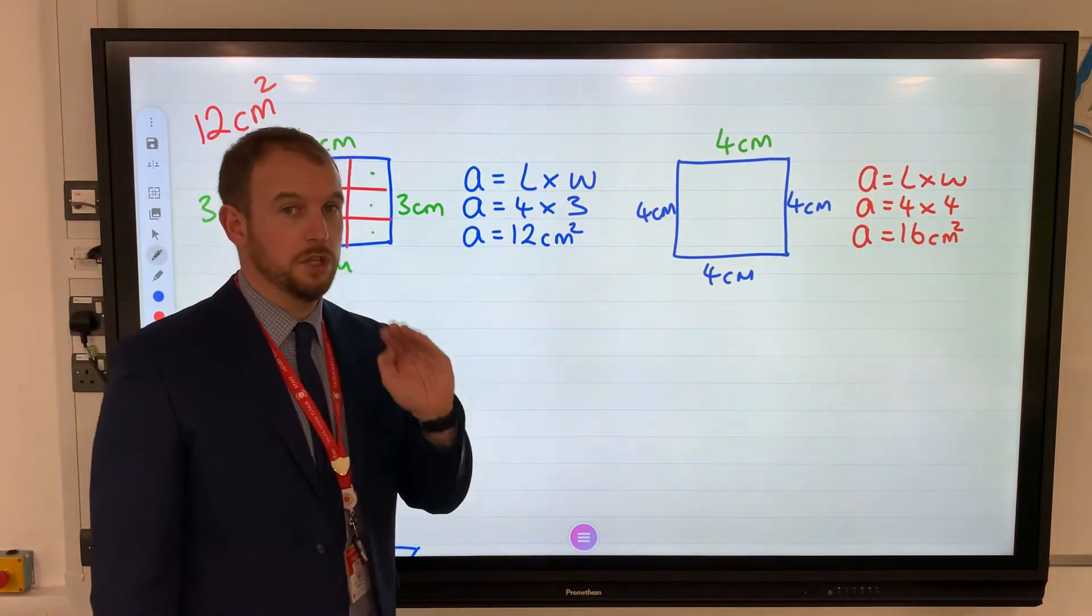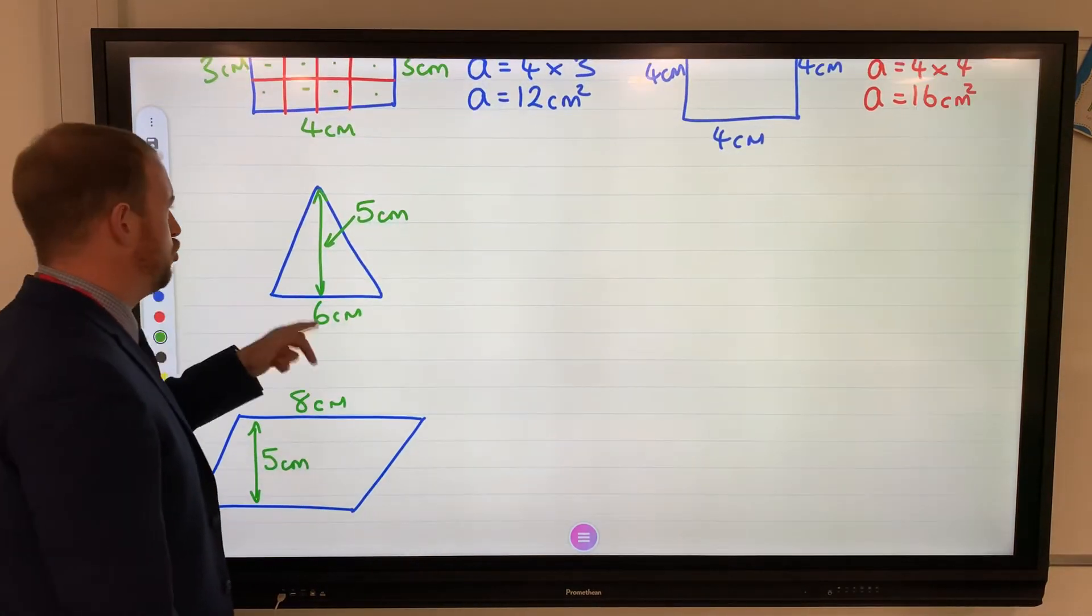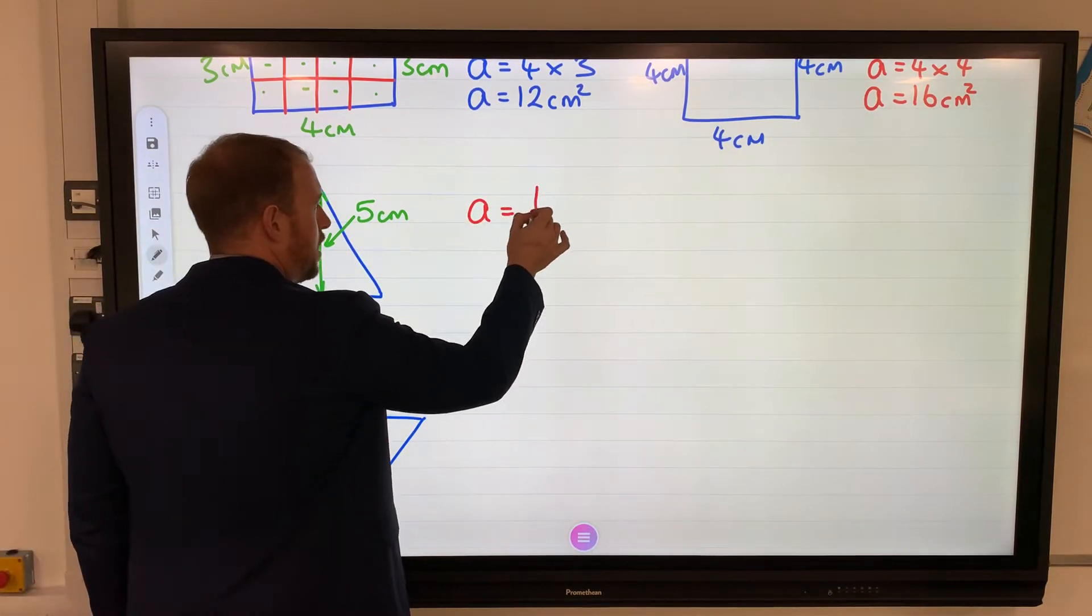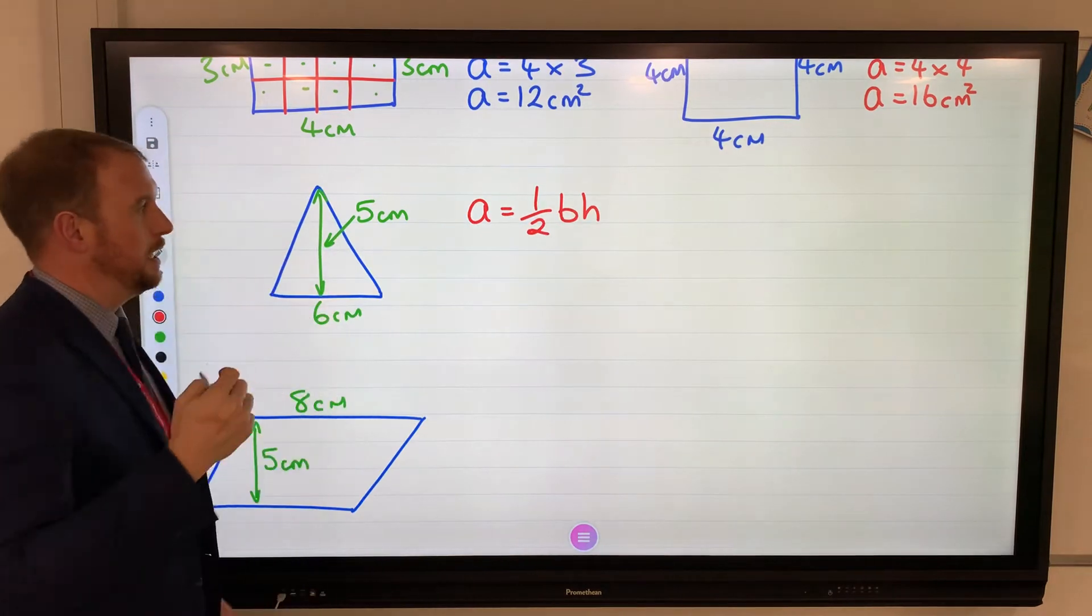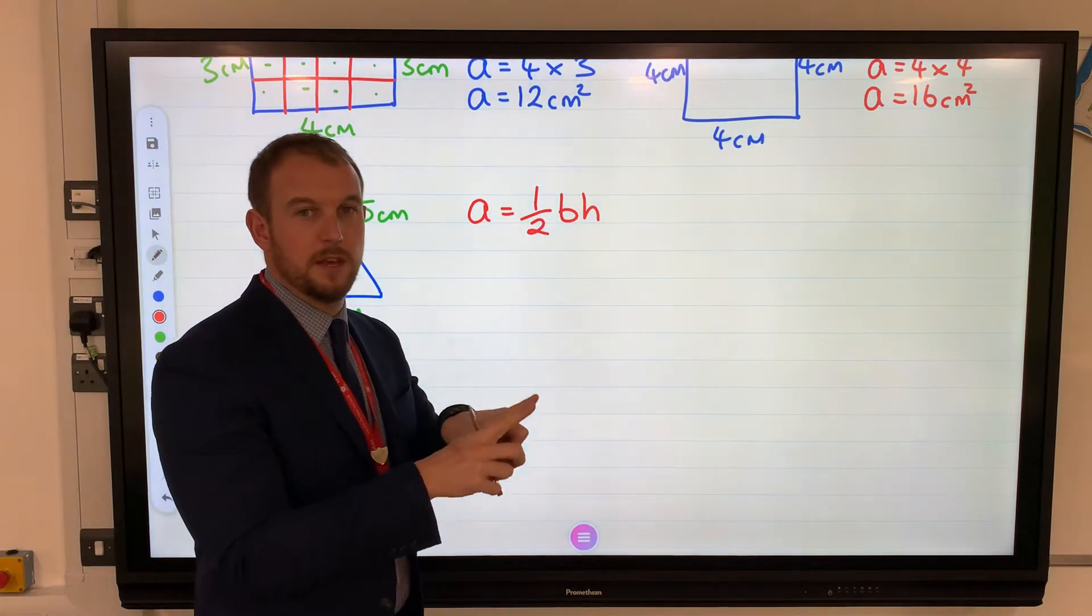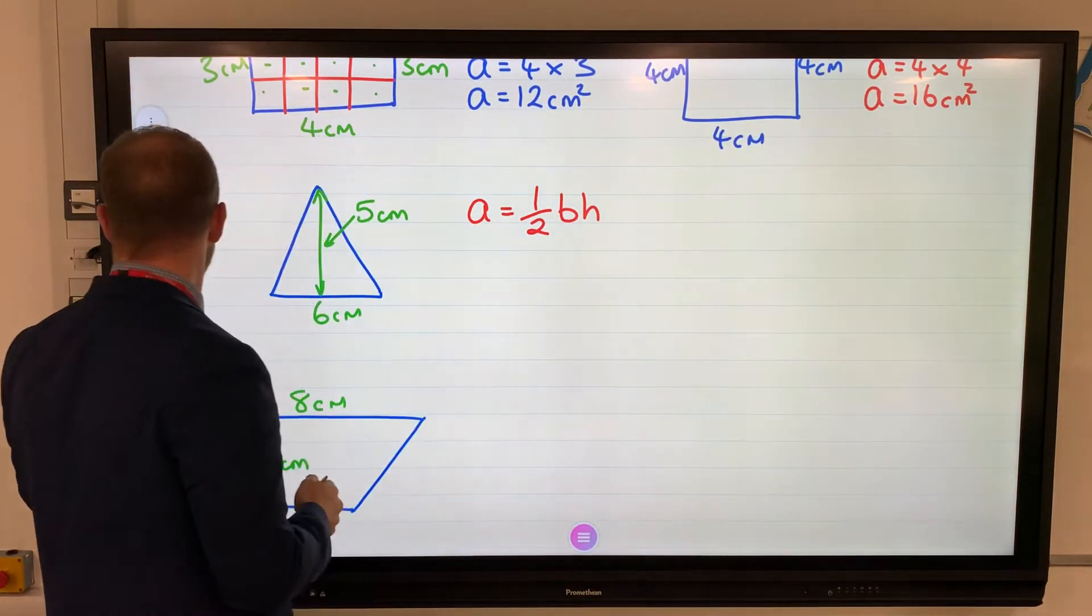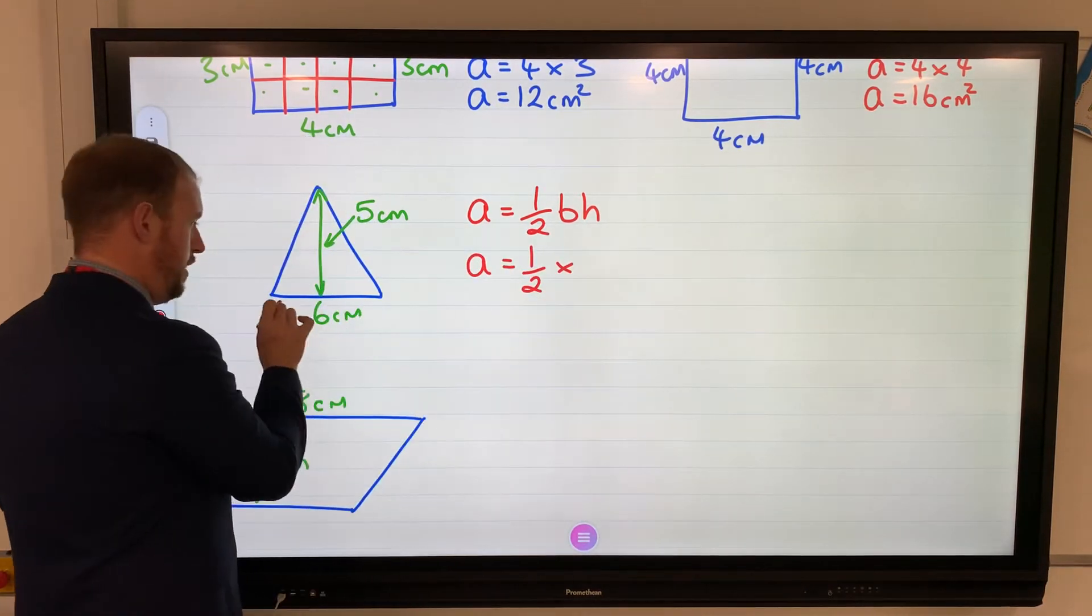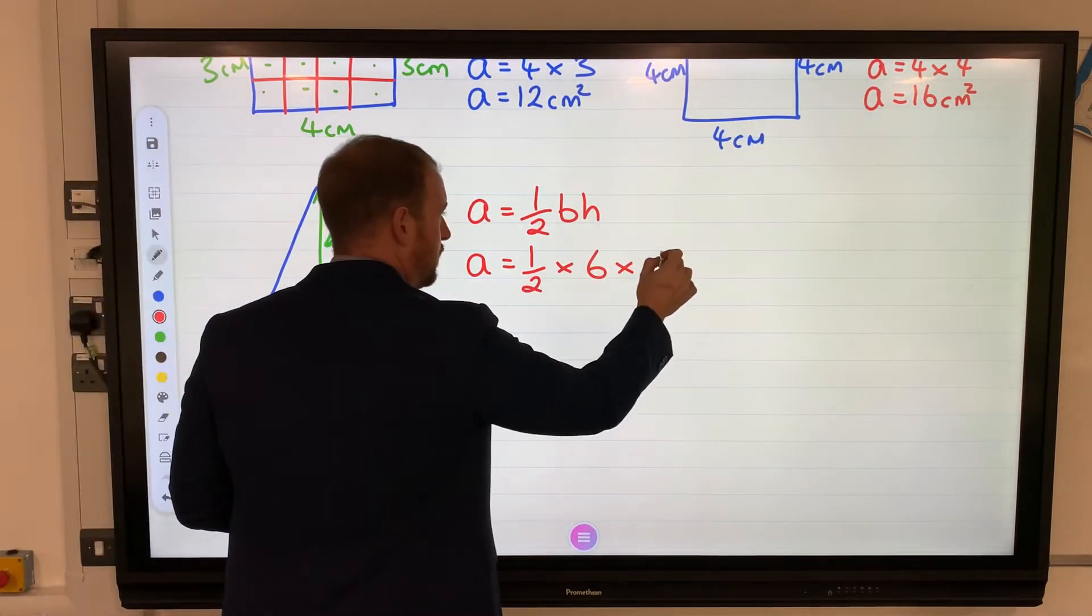A triangle - different formula this time. Area equals half of the base times the height. Now, as math teachers we're a little bit lazy - we don't put the times sign when we just stick them together, but we have to remember there's a times sign in between. So area equals half of the base being six, multiplied by the height which is five.